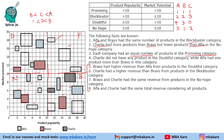Now we analyze revenues. Bravo had higher revenue than Alpha from Doubtful category products. Alpha's known revenue in Doubtful is 4 plus 1 = 5, plus 6 and 1 more, totaling around 12 units. We need to assign one remaining product — the large one — to Bravo so that Bravo's revenue exceeds Alpha's. So the large rectangle goes to Bravo, and all others go to Alpha.